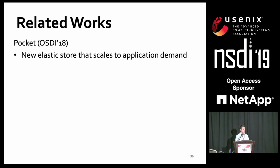This is not the first work to study shuffling on a serverless architecture. In particular, an OSDI '18 paper designed a new elastic store that scales to application demand when shuffling data. Our work focuses on solutions using currently deployed cloud storage systems, and our performance model remains useful for deciding combinations of different storage types even as new data stores become available.